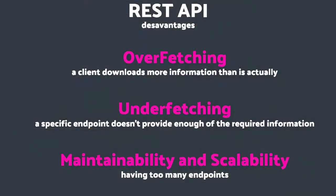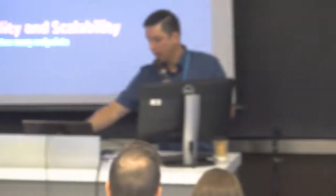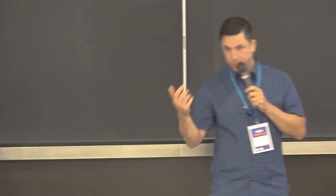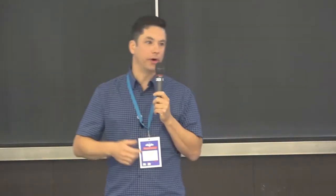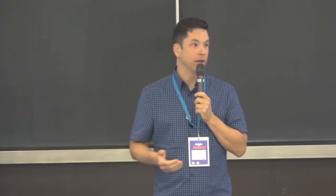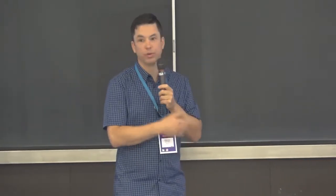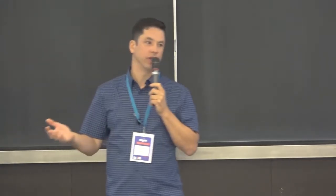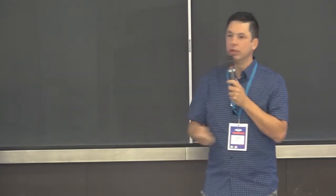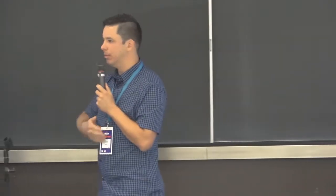The other problem is underfetching — making your user download not enough data so it needs to hit different endpoints to retrieve all the data needed to render your UI. And talking about maintainability and scalability: if you're Facebook or Google and have an API, you might have a thousand endpoints to maintain. If you retrieve an image in 500 endpoints and want to change how images are called, you need to go back through all those endpoints and modify them — totally unmaintainable at scale.